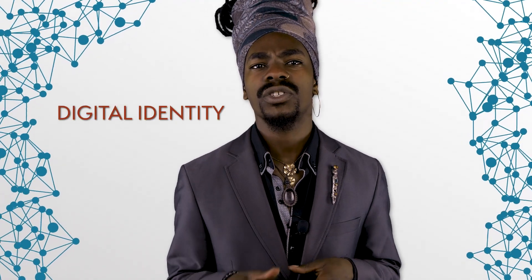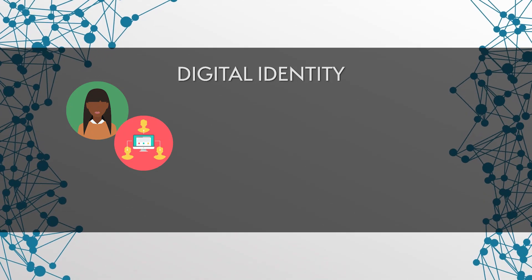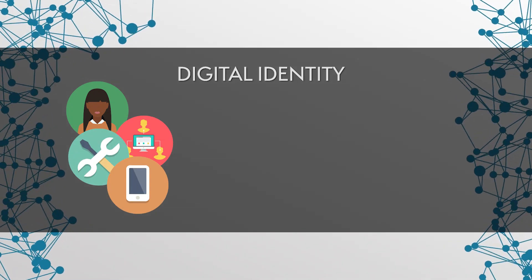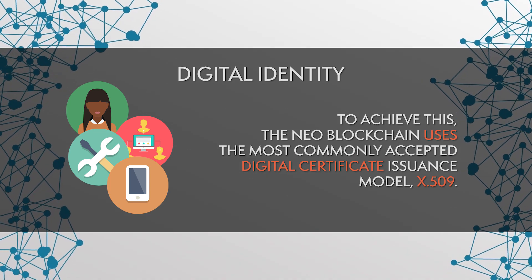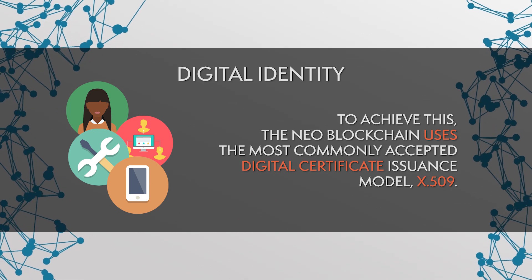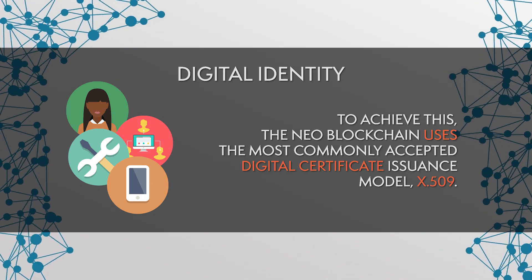Digital identity bridges the physical world with digital assets. Each person, organization, application, or device needs to be identifiable in the network. To achieve this, the NEO blockchain uses the most commonly accepted digital certificate insurance model, X-509, which uses a public key infrastructure for unique identification. This includes the use of facial features, fingerprints, voice, SMS, and other multi-factor authentication methods.